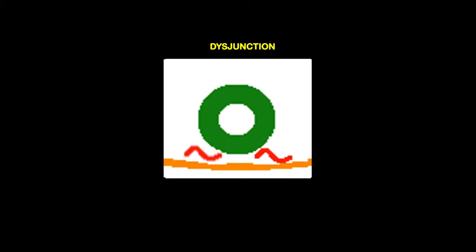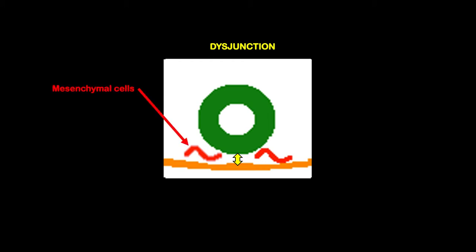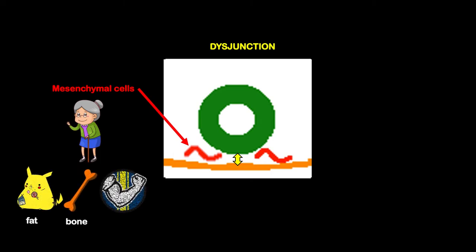This process of separation is called disjunction. Looking more closely, this separation allows the mesenchymal cells, which are the grandma of fat, bone, and muscle, to form around the cord, including the part between the cord and the skin.